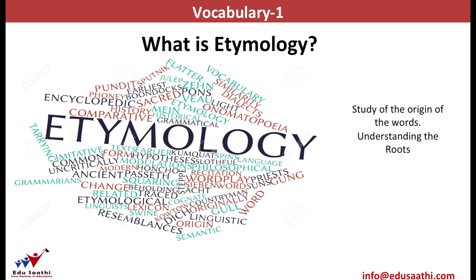In simple words, etymology is the study of the origin of words and it focuses on understanding the word roots. In the junior classes, we used to study the concept of prefixes and suffixes. Etymology is an extension to this very concept. It focuses on breaking a word into smaller parts and then interpreting the meaning of this word based on our understanding of these smaller parts, known as roots.